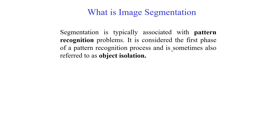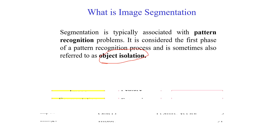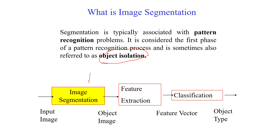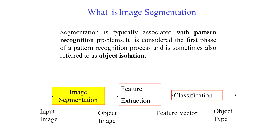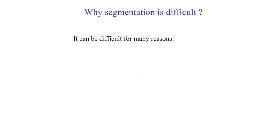In formal notation, image segmentation is a pattern recognition problem considered as object isolation — isolating the object of interest from the background. Image segmentation is typically the first step in a computer vision pipeline. Given a series of input images, the aim is to reduce the dimension of the image that needs to be processed later. After segmentation, only a small portion of the area is extracted and passed to higher-level processing for feature extraction, classification, and so on.